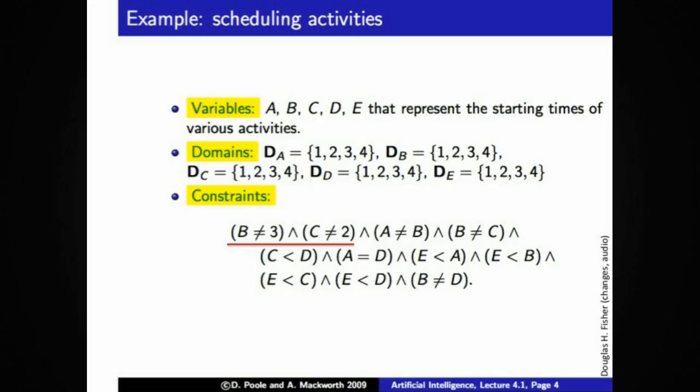In this lecture, we're going to continue with constraint satisfaction problems. A constraint satisfaction problem is defined by a set of variables, domains — in this case 1, 2, 3, 4 — this is a scheduling domain. And finally, a constraint satisfaction problem is defined by a set of constraints.